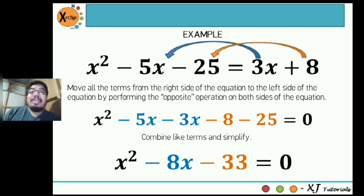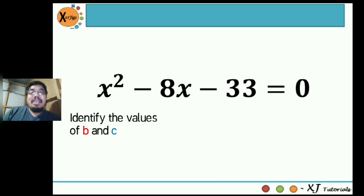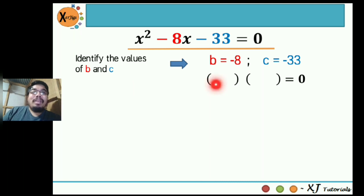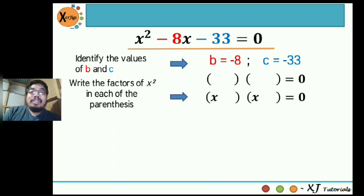Both equations are the same. Since we already have the equation in standard form, we can now identify the values of a, b, and c. b is the linear term beside x: negative 8. c is negative 33. And a is equal to 1, that's given. Next, draw the parentheses — this is where we write the factors. Considering our quadratic term is x², write x in the first parenthesis and another x in the second.